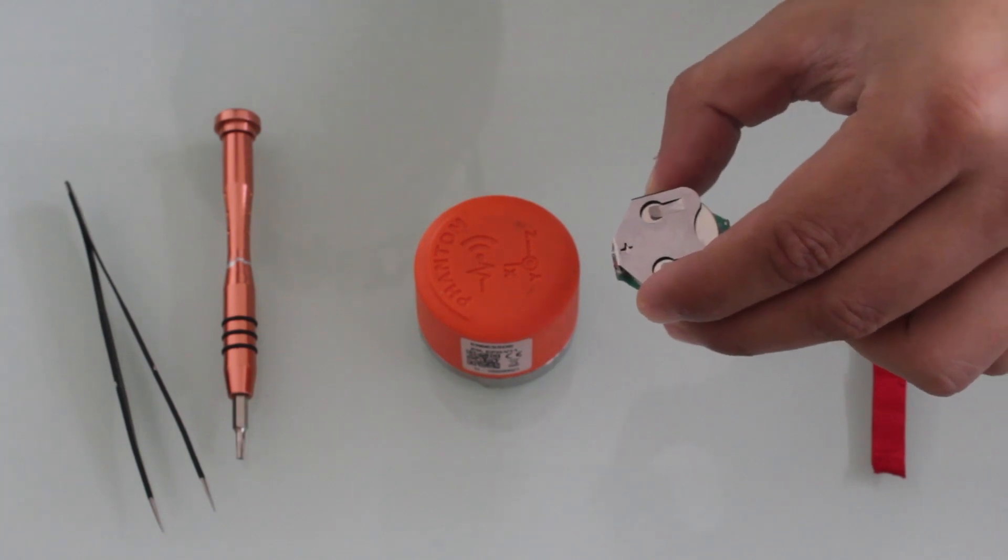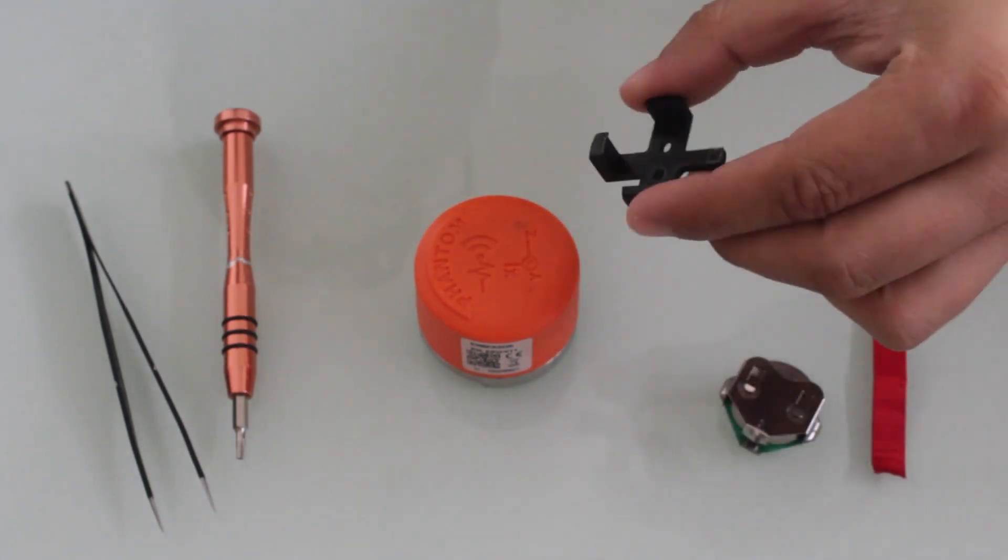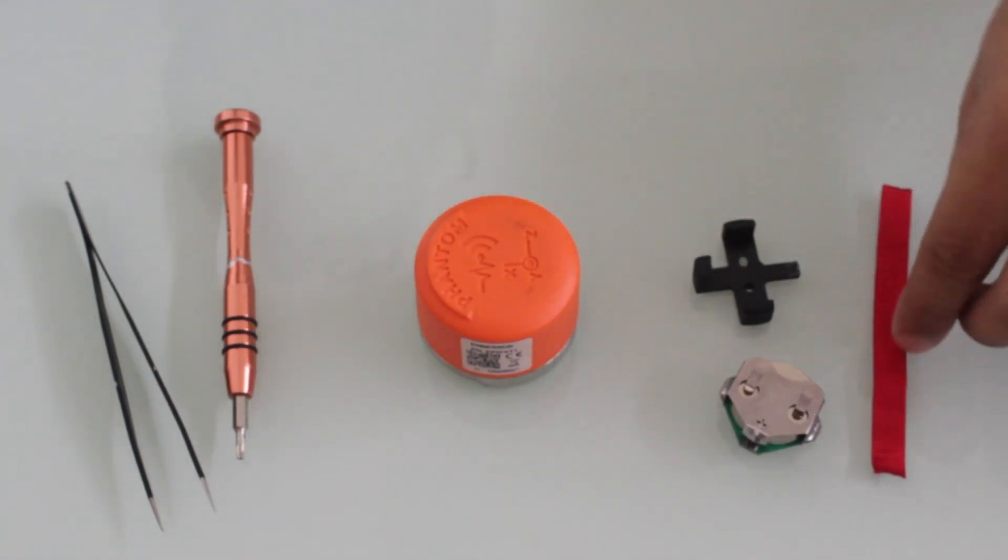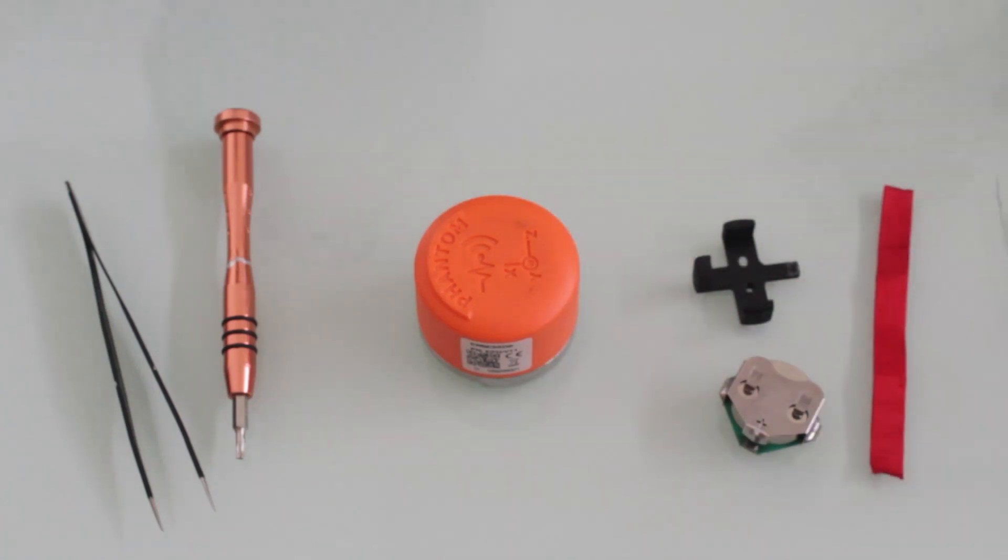The adapter has 3 parts, the battery holder, this external bracket and a ribbon of approximately 7cm.